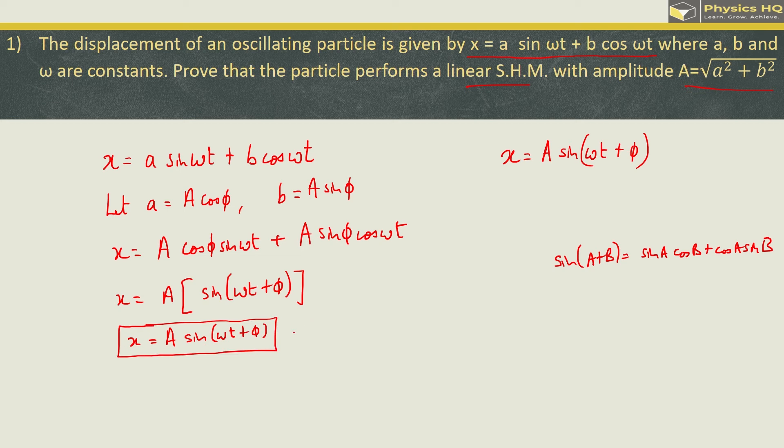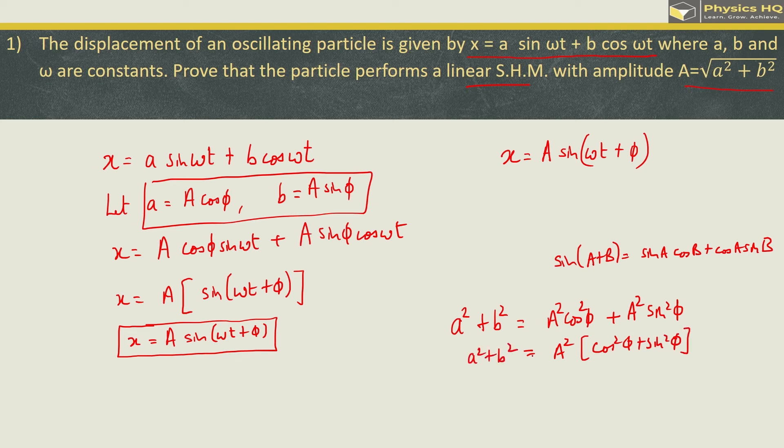Let us find out the amplitude of this. For that we will be using these two equations. Let us find out what is small a squared plus small b squared. This is equal to capital A squared cos phi squared plus capital A squared sine squared phi. Capital A squared commonly what we are left with is cos squared phi plus sine squared phi.